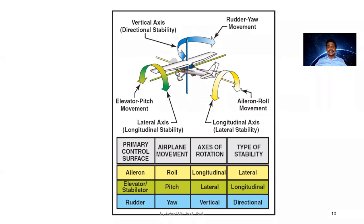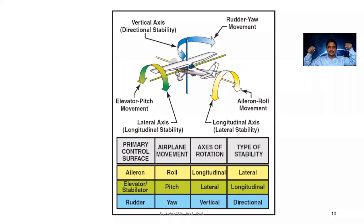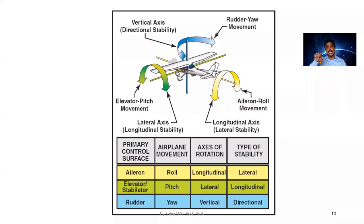As far as the lateral axis is concerned, the aircraft can pitch up and pitch down when the lateral axis is fixed. When the directional or vertical axis is fixed, the aircraft moves right and left. So we have three axes and three movements — axes of rotation.